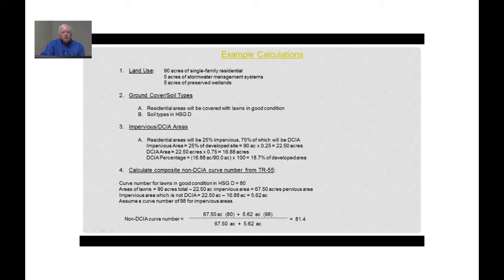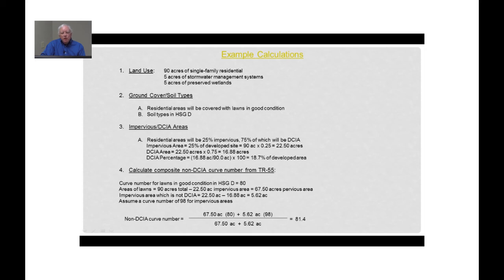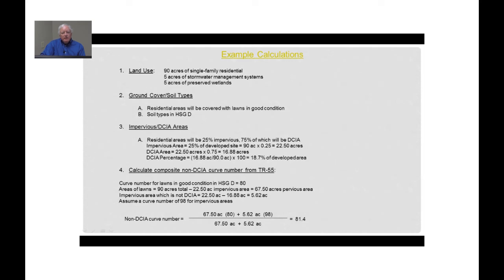Next, calculate the composite non-DCIA curve number. A lawn in good condition in hydrologic soil group D corresponds to a curve number of 80. The lawn area is 90 acres minus 22.5 acres of impervious area, giving 67.5 acres of lawns. The non-DCIA impervious area is 22.5 minus 16.88, giving 5.6 acres of impervious area not discharging directly to the stormwater system. The resulting composite non-DCIA curve number is 81.4.